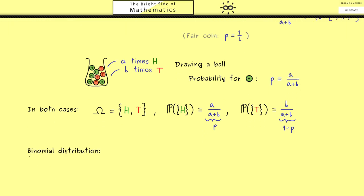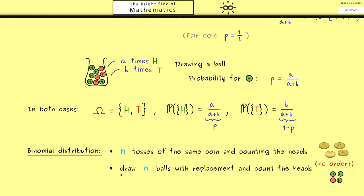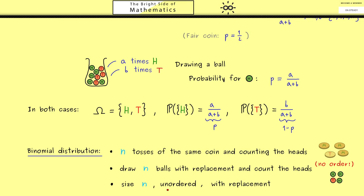With this foundation, we can now talk about the binomial distribution. Here we don't have a single coin toss — we do it n times and count the number of heads. Importantly, we are not interested in which order heads and tails occurred. Equivalently, we could describe this with n urns, but more efficiently we take one urn and draw n balls with replacement: draw, note, and put the ball back. So the three things to remember are: sample size is n, unordered, and with replacement.